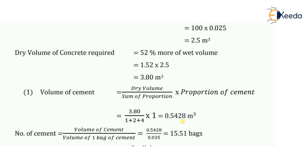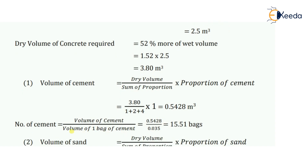We have to convert the volume of cement into number of bags. The formula is: volume of cement divided by volume of one bag of cement. The volume of one 50 kg bag of cement is 0.035 cubic meters. So 0.5428 ÷ 0.035 = 15.51 bags of cement required for the DPC work.